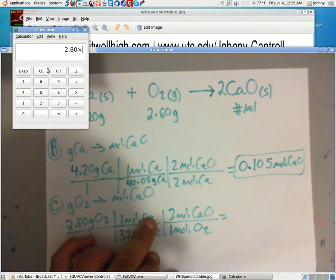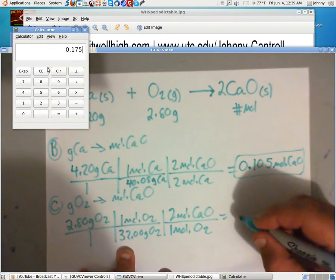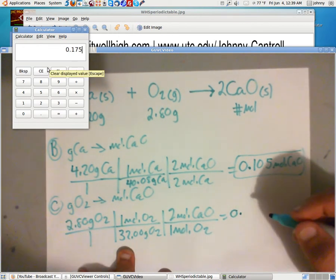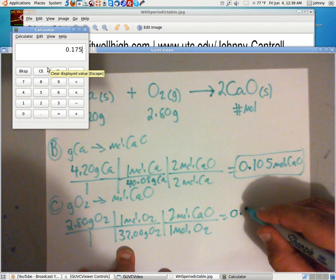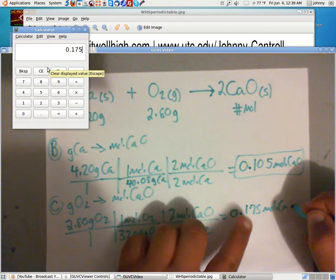Now, let's do this one. We have 2.80 times 2 divided by 32. So 0.175. And that's moles of CaO.